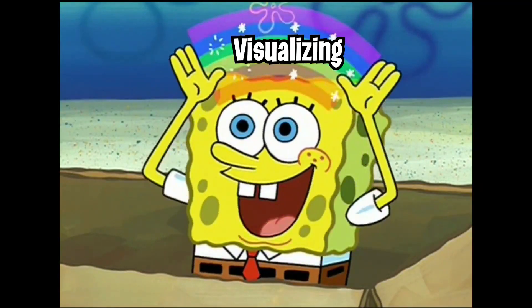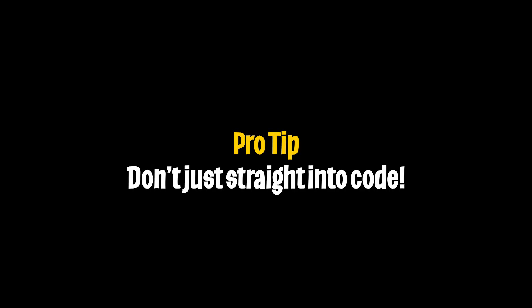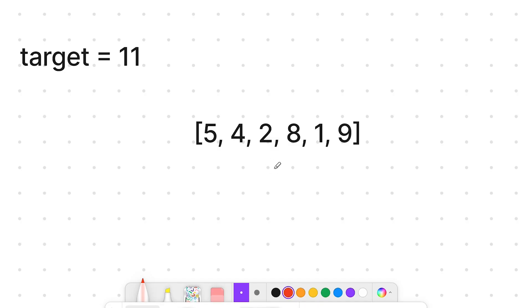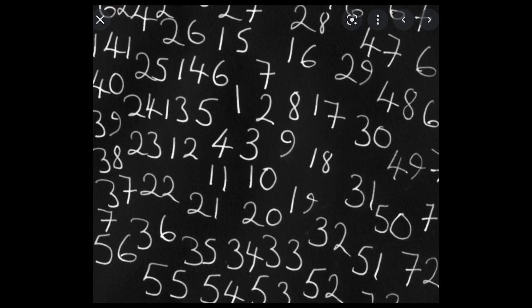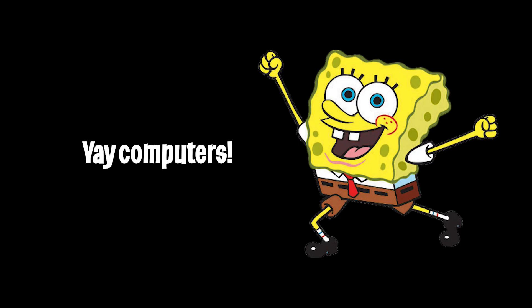Before writing any code, we should start by visualizing the problem. So draw the example out and let's run through the example together. As humans, we can just use our eyes to spot that 2 and 9 add up to the value 11. However, if the list grows in size, it'll be very difficult for us to spot the two numbers with our own eyes. And that's why computers exist.